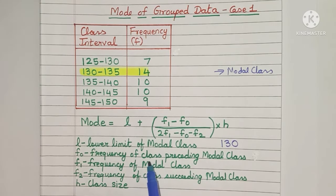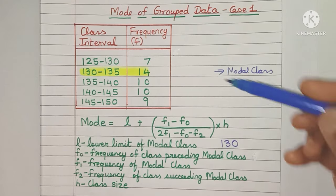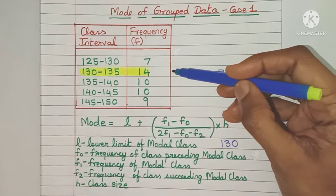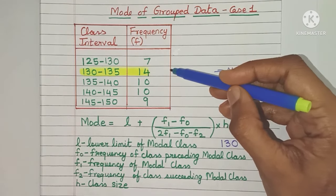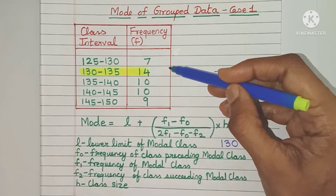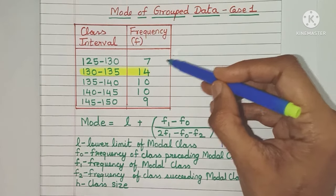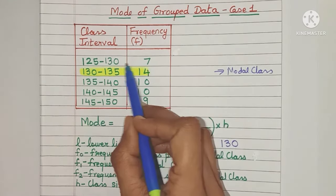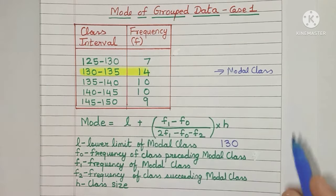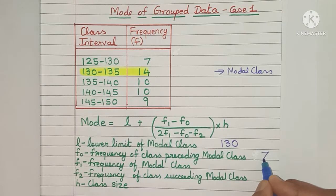F0 is the frequency of the class preceding the modal class — preceding means coming before. So this is the modal class, and the class that comes before it has a frequency of 7. So F0 will be 7.